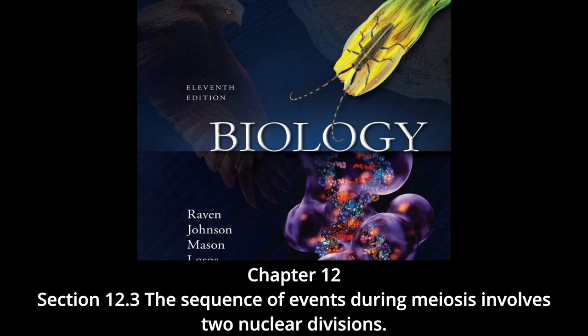During diakinesis of prophase one, the chiasmata move down the paired chromosomes from their original points of crossing over, eventually reaching the ends of the chromosomes — at this point they are called terminal chiasmata. Terminal chiasmata hold the homologous chromosomes together in metaphase one so that only one side of each centromere faces outward from the complex. Consequently, spindle microtubules are able to attach to kinetochore proteins only on the outside of each centromere, and the centromeres of the two homologs attach to microtubules originating from opposite poles.